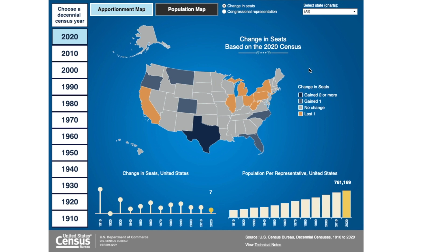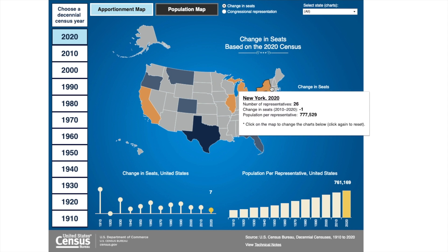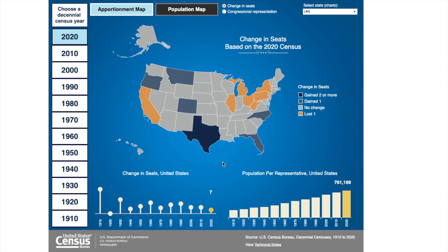Whether you'll be making a comparison or looking at states individually, this map will show you the number of seats in the U.S. House of Representatives for each state, changes to the number of seats, and the population per representative for the U.S. and for each state. And if you change to the population map, you'll be able to see the resident population of each state, the percent change in resident population, as well as the population density for each state.